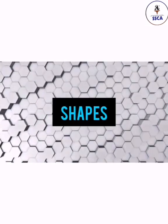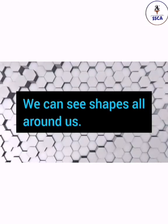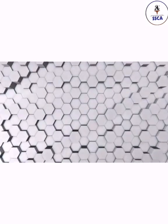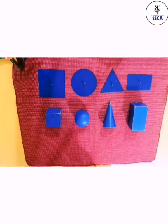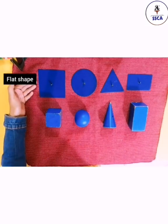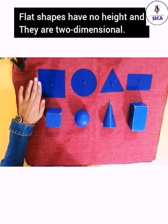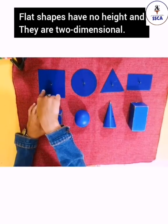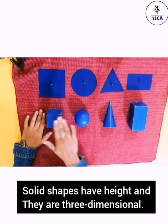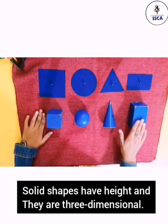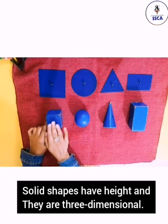The topic is shapes. We can see shapes all around us. Let's look at some solid and flat shapes. Flat shapes have no height — inki koi height nahi hoti — and they are two-dimensional. Solid shapes have height — solid shapes ki height hoti hai — and they are three-dimensional.